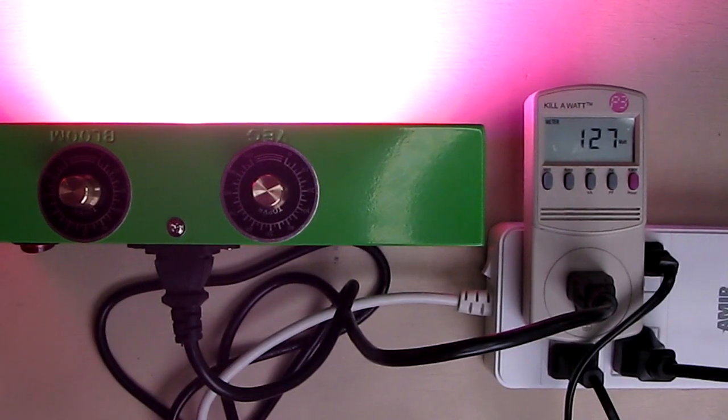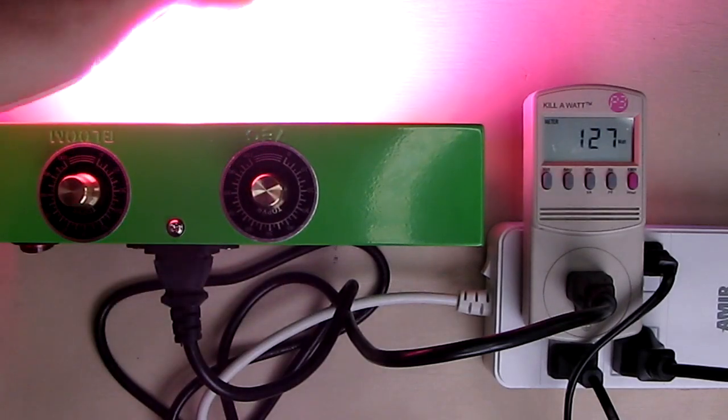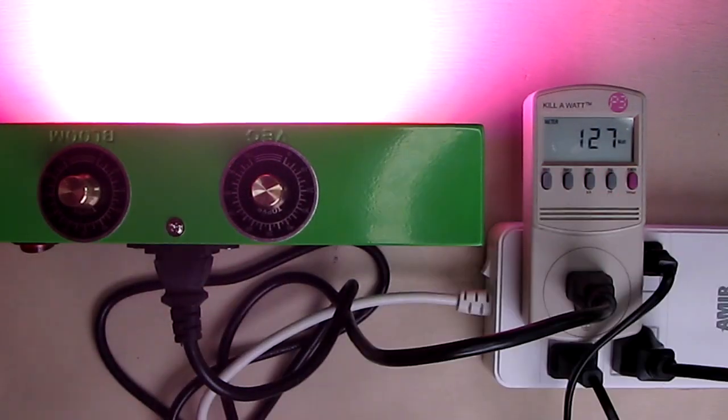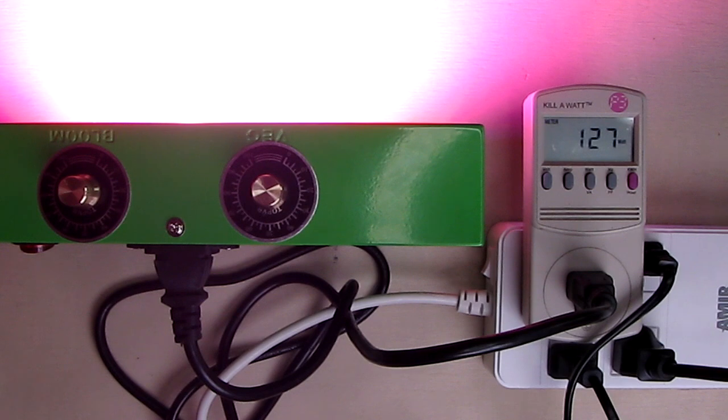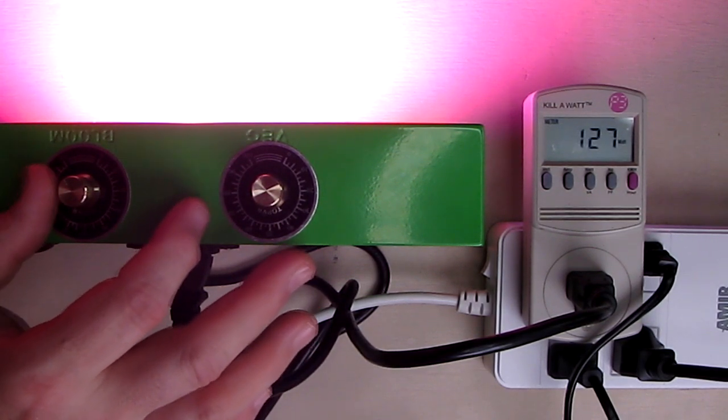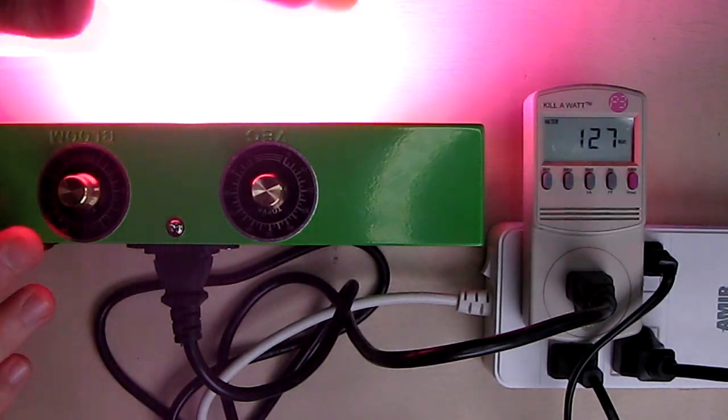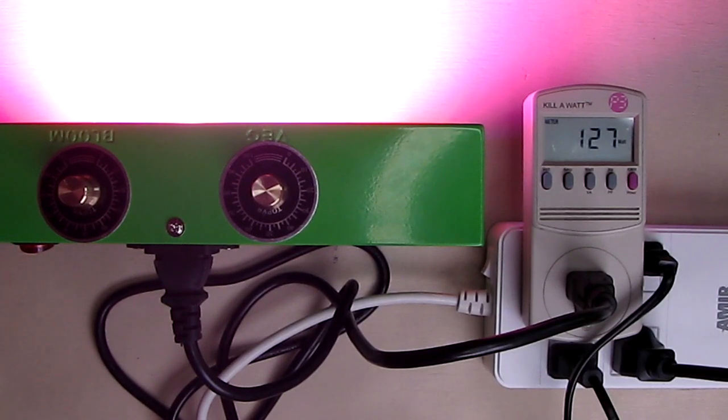So let's talk about efficiency. I have a watt meter hooked up to the device. Now this produces 1200 watts equivalent of LED light but look at how many watts it's only consuming. It's consuming 127 watts. That's where you get into the efficiency of LEDs. The actual efficiency of this is 76.692 lumens per watt and that tells you that this is efficient.